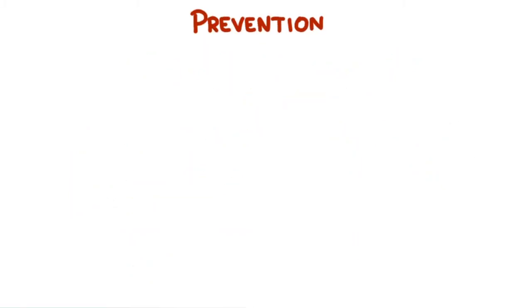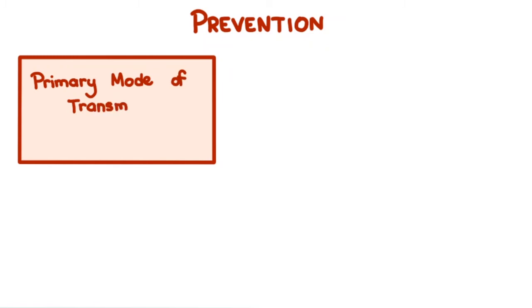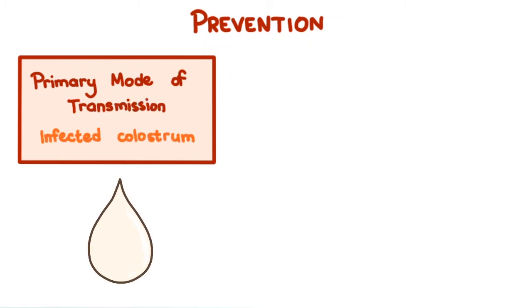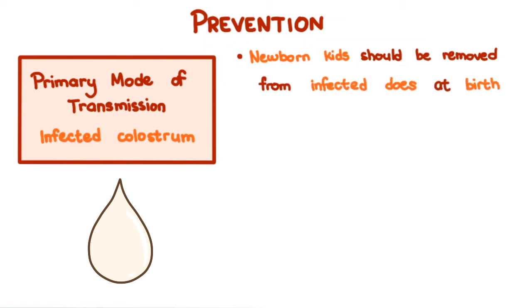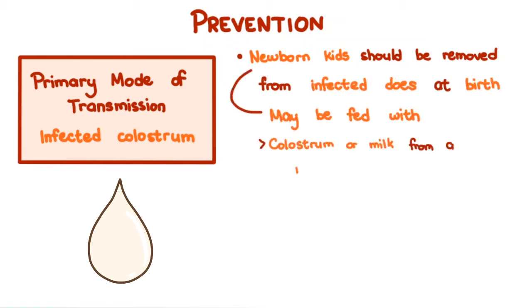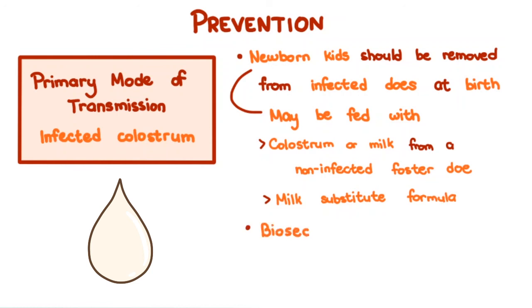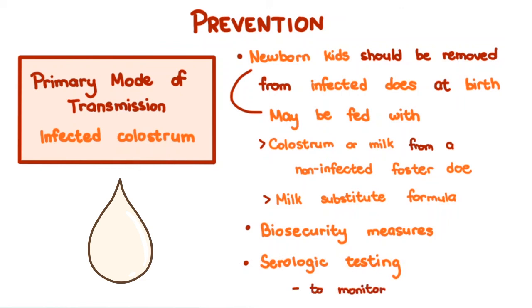Prevention: Given that the primary mode of transmission is through infected colostrum, newborn kids should be removed from infected does at birth. They may be fed with colostrum or milk from a non-infected foster doe, or with a milk substitute formula. Biosecurity measures must be strictly implemented, and serologic testing should be done to monitor the infection status of the herd.